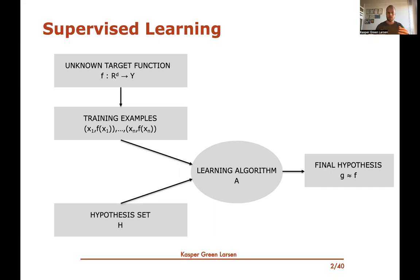From this unknown target function we see n training examples x1 to xn — these are feature vectors — and the corresponding labels, evaluations of the unknown target function f: f(x1), f(x2), up to f(xn). All these training examples are fed into the learning algorithm, which uses this training data to find a hypothesis g from a fixed set H that hopefully looks a lot like the target function.